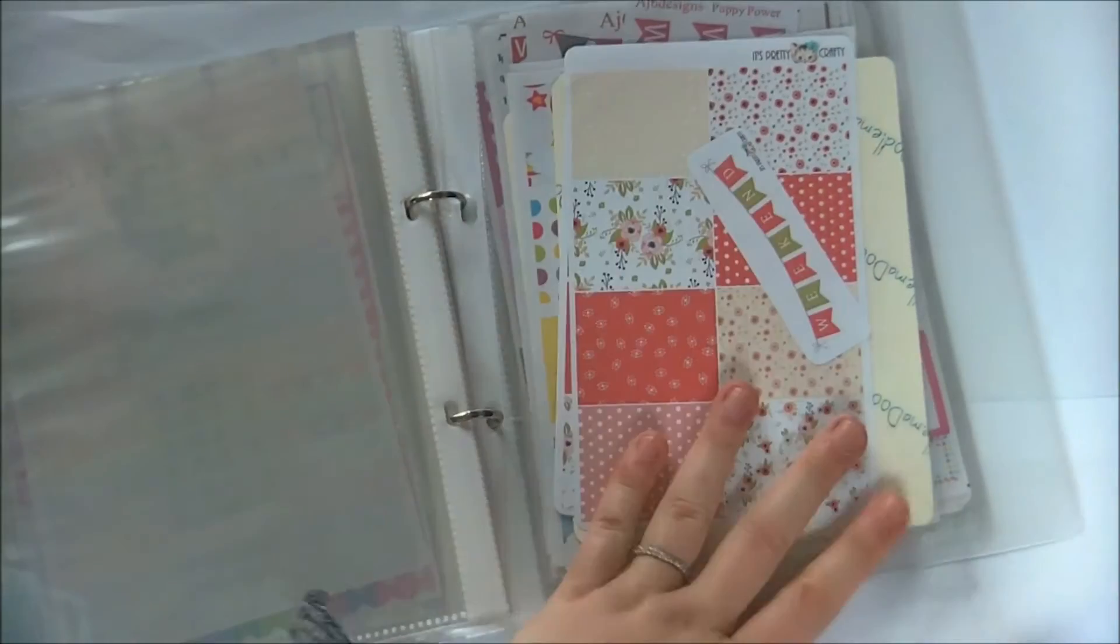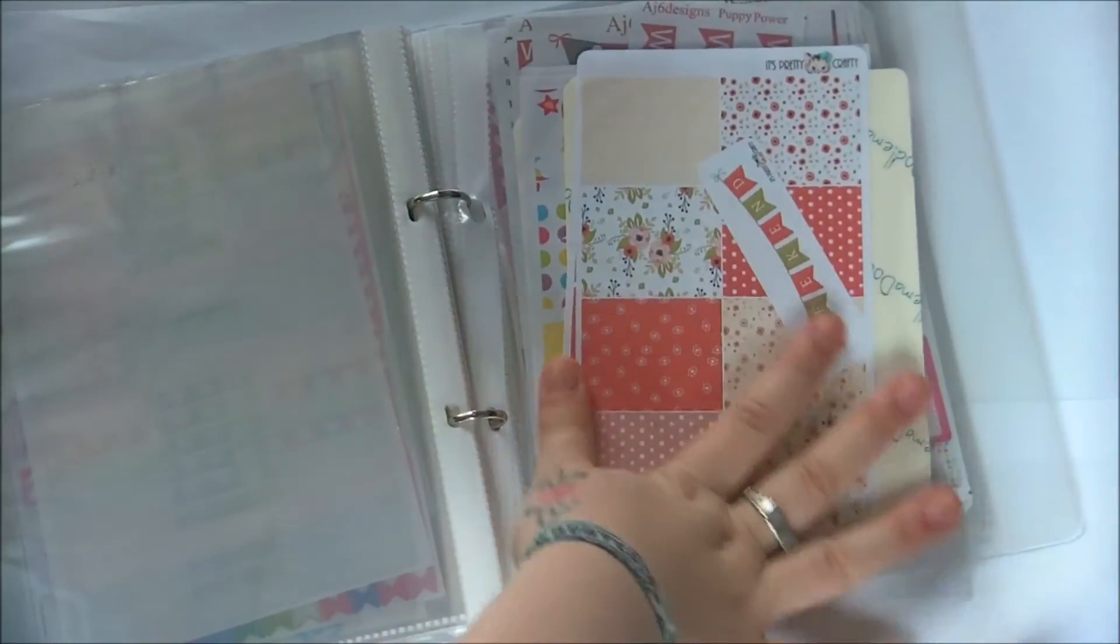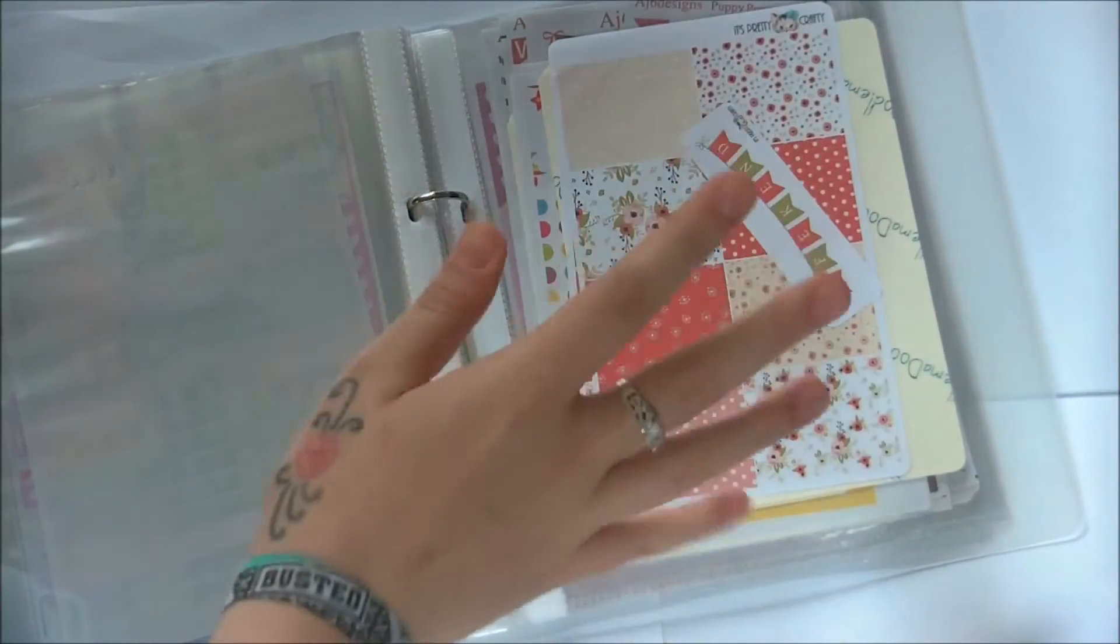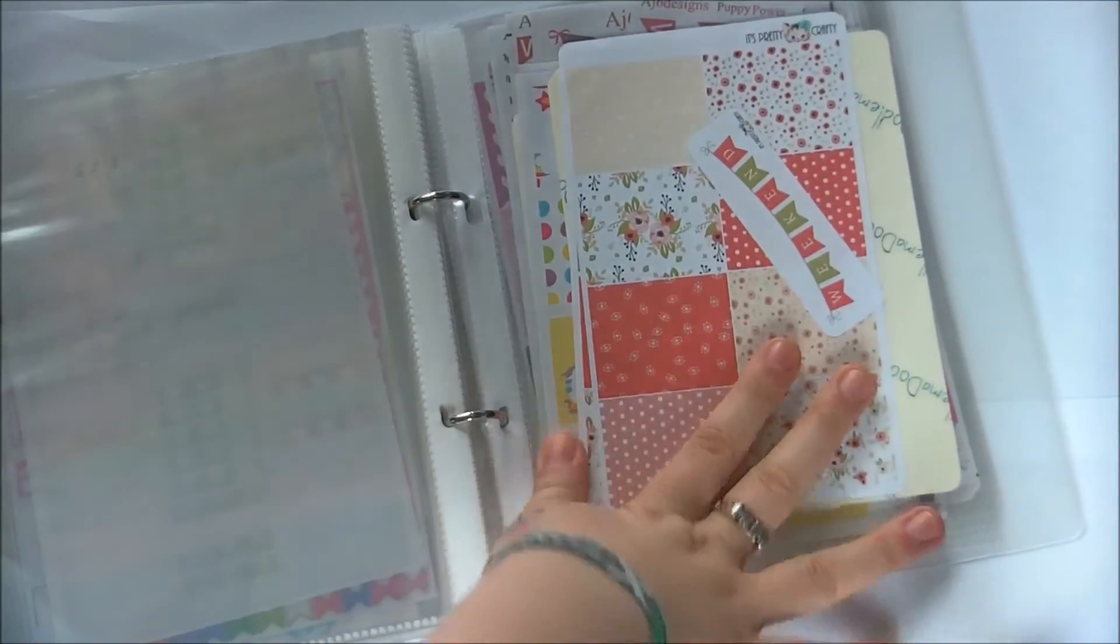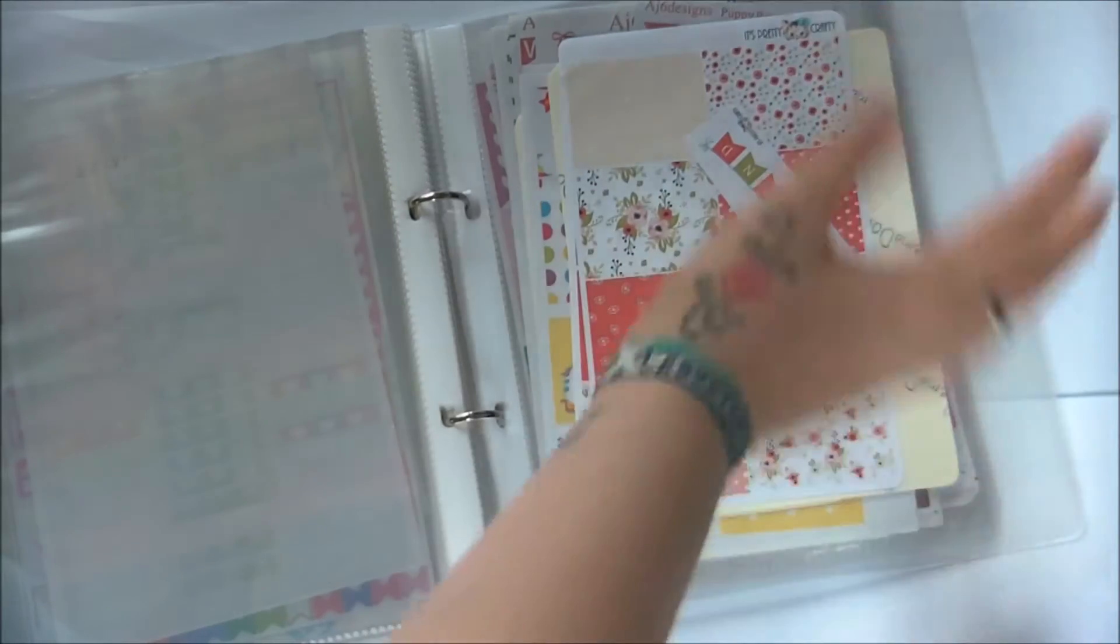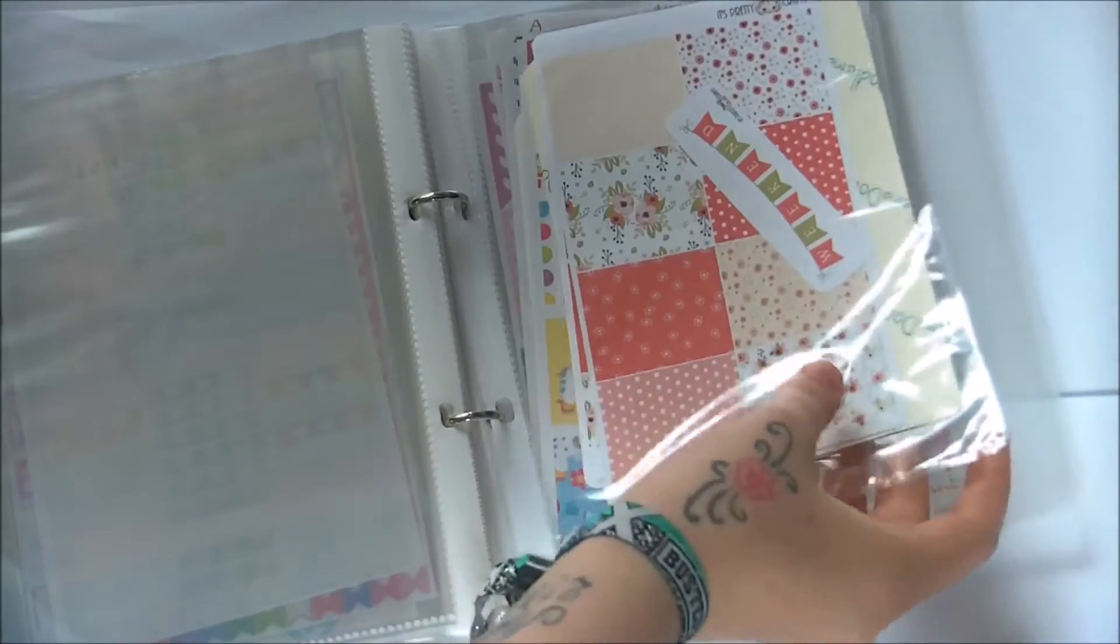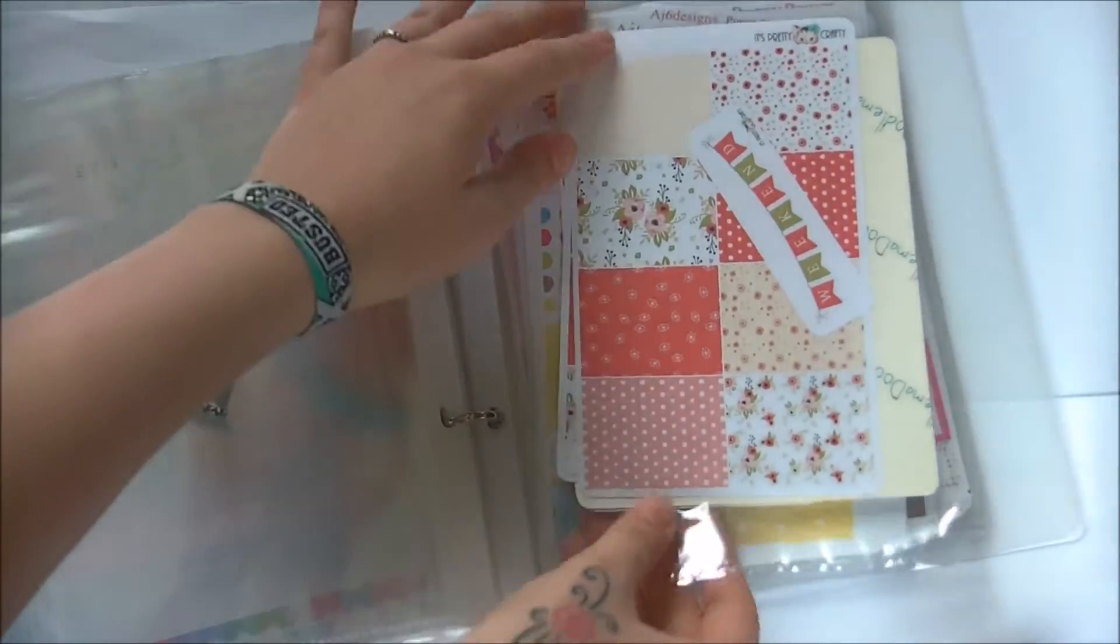I have a section in the middle that has pockets and doesn't have any stickers in. Then I have my sets at the back of the folder. I know that as my sticker collection grows I'm probably going to have to get a separate folder for these, but at the minute it's easy to have them there.